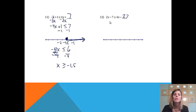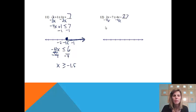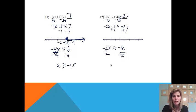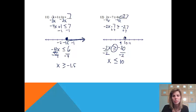Let's put in 27: 2x minus 7 is greater than or equal to 4x minus 27. Please pause and try it. Subtract 4x from both sides: 2x minus 4x is negative 2x, so negative 2x minus 7 is greater than or equal to negative 27. Add 7 to both sides: negative 2x is greater than or equal to negative 20. Divide both sides by negative 2 — and since we divide by a negative, we flip the sign — giving x is less than or equal to 10. Graph at 10 with a closed circle and shade left.